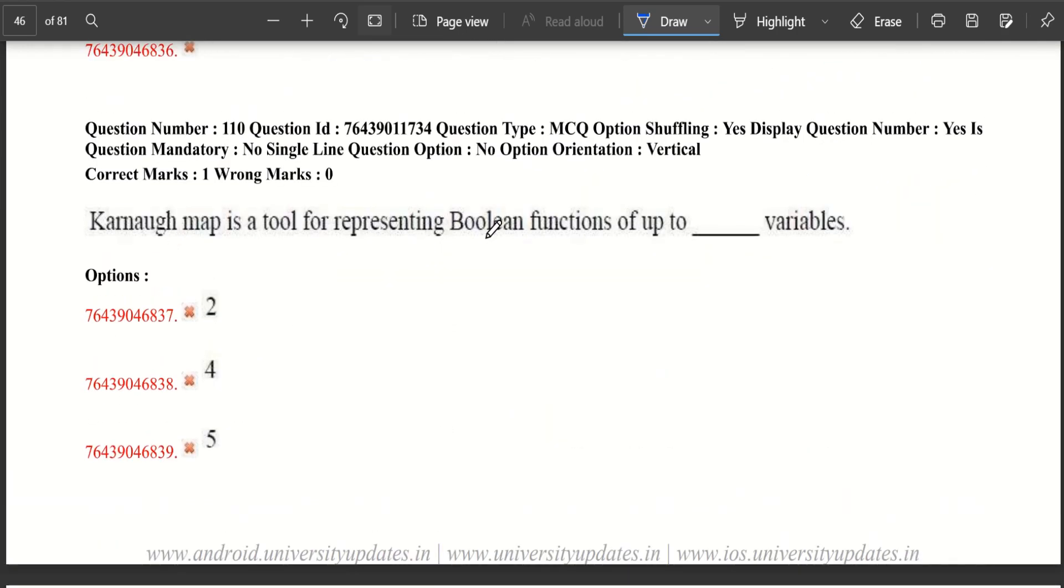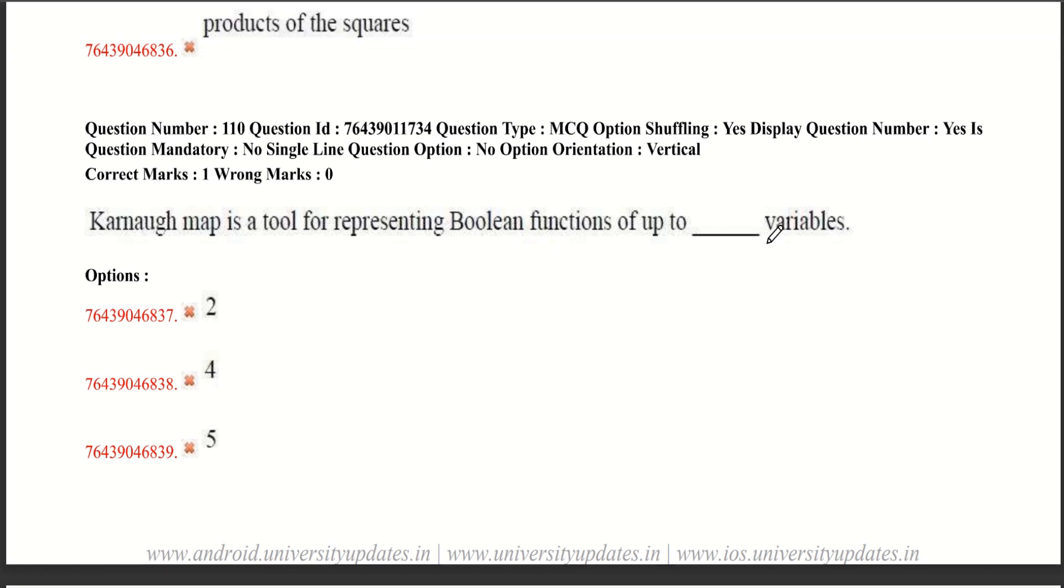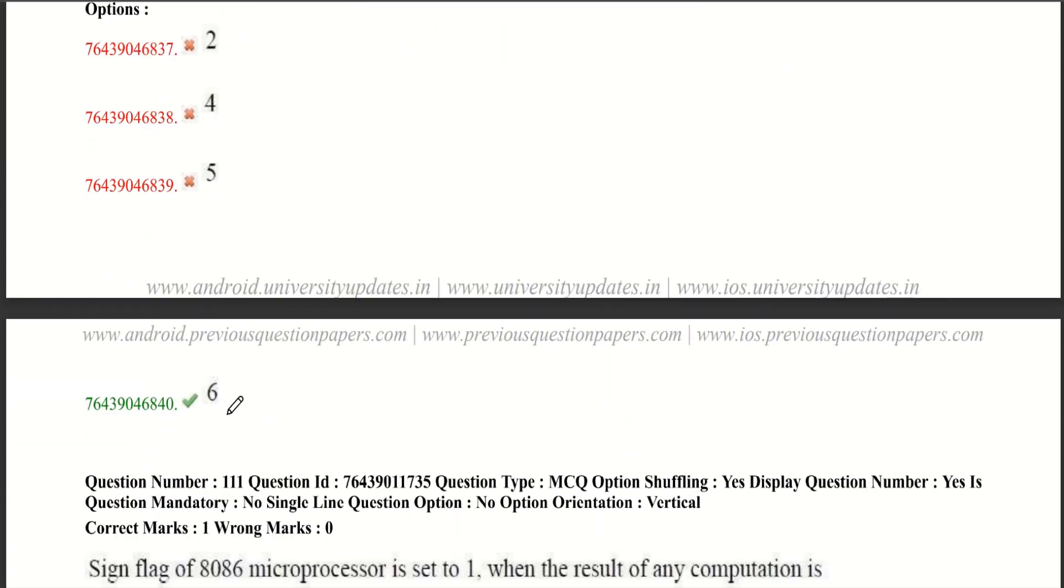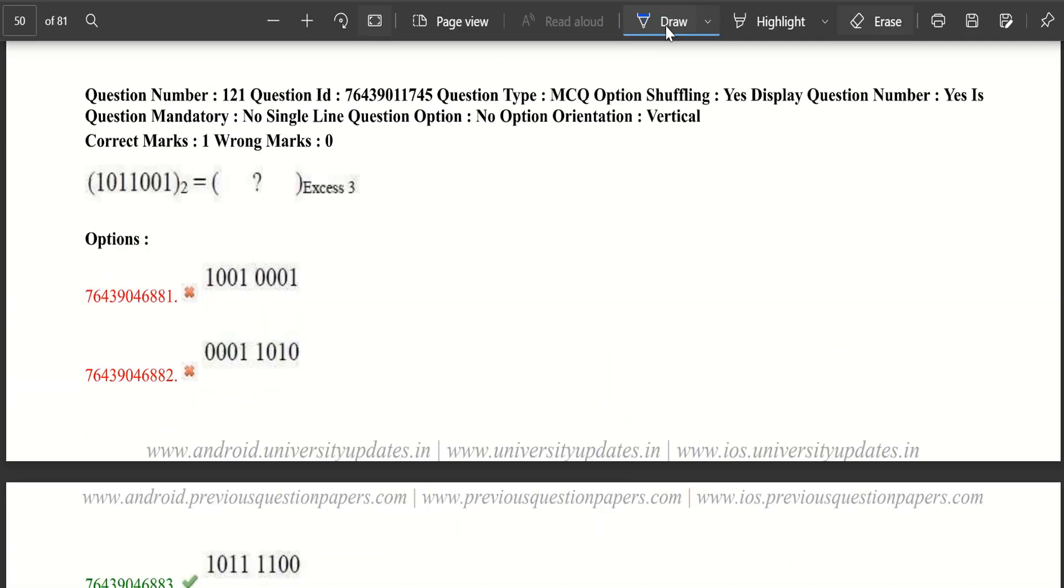Now let's move to the next question. K-map is a tool for representing boolean functions of up to dash variables. Actually after 4 variables, it is not good to use K-map. Because it takes a lot of time as well as confusing. But still, it can be possibly used up to 6 variables. So the correct option might be 6.